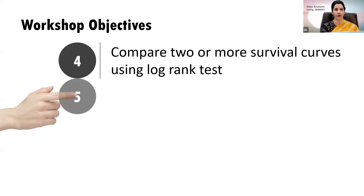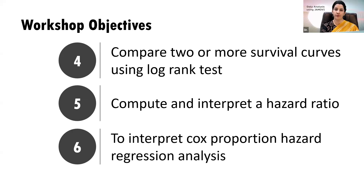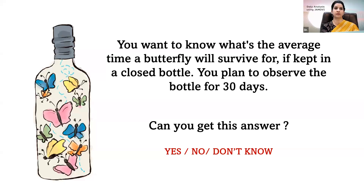The later objectives — computing and interpreting a hazard ratio and interpreting Cox proportional hazard regression analysis — will be covered in the next session, as it is difficult to cover all concepts in one and a half hours. So today we are restricting ourselves only to the life table and Kaplan-Meier approach.